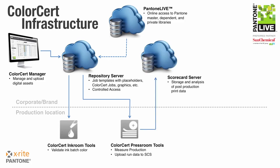When the production order is finished, we upload the run data to the scorecard server. This server allows us to view and analyze production data over time. We can compare production from one press to another, one production facility to another — we can even view trends by individual color, item, brand, etc. Having access to this data provides us with the information necessary to truly embrace continuous improvement in our manufacturing locations.